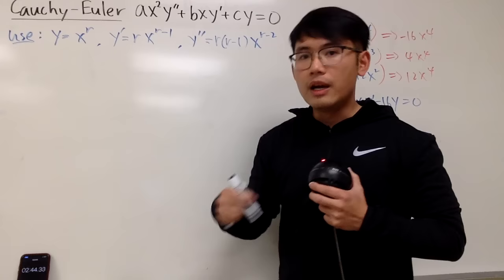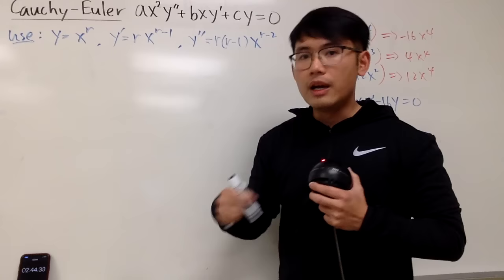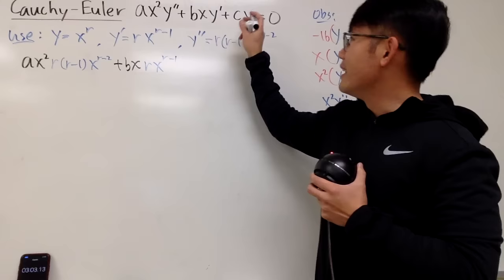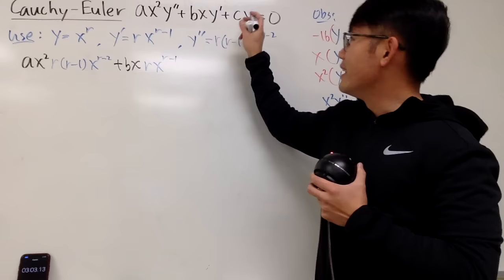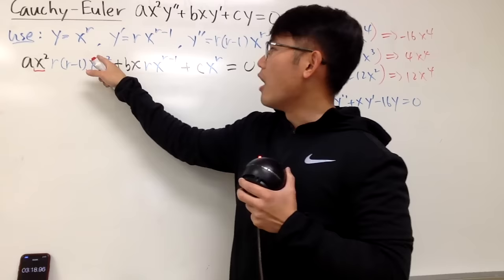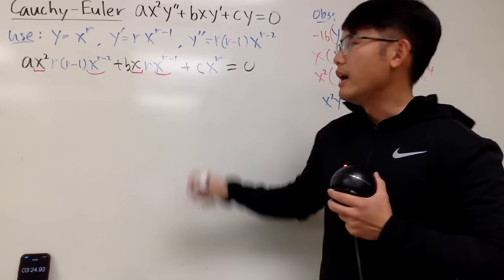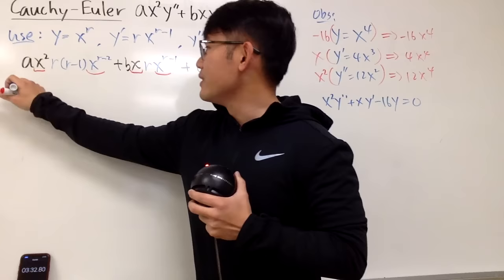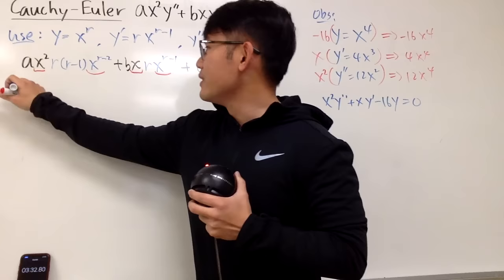Substituting into the equation: a·x²·[r(r−1)x^(r−2)] + b·x·[r·x^(r−1)] + c·[x^r] = 0. Notice that every term simplifies to x^r — since x²·x^(r−2) = x^r, and x·x^(r−1) = x^r. So we can factor out x^r from everything.